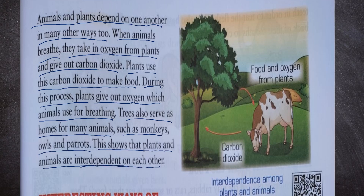As we can see in this picture on interdependence among plants and animals: food and oxygen from plants is taken by animals, and they release carbon dioxide which is taken by plants to make their food. So they are interdependent on each other.